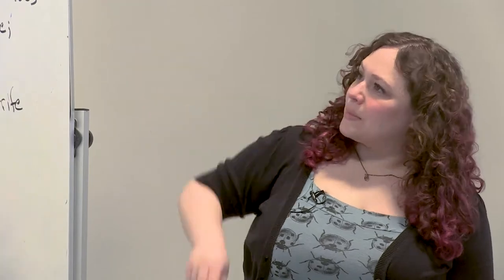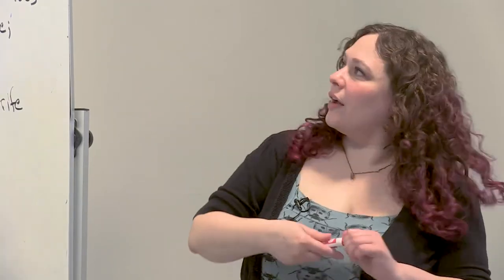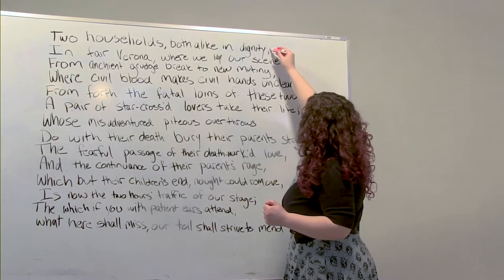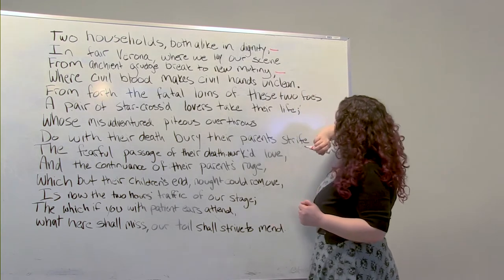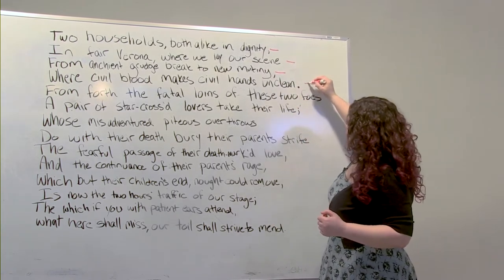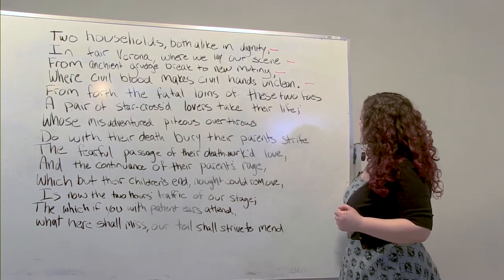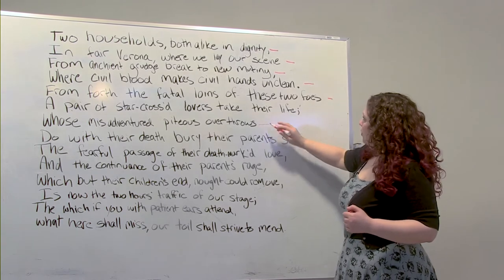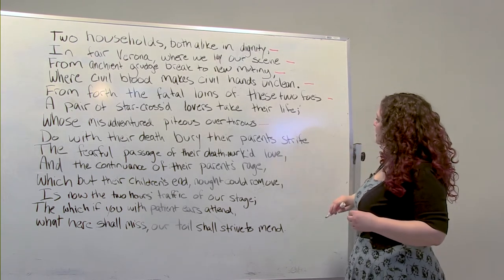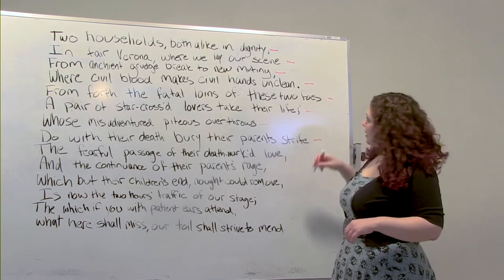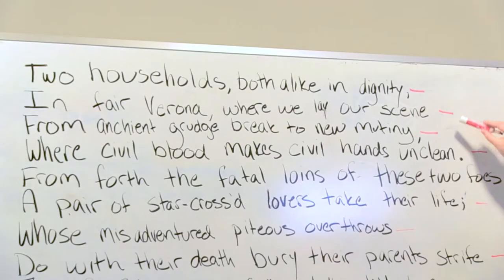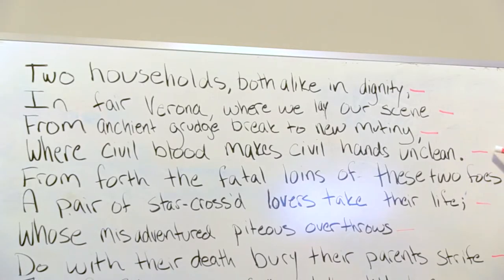Now we've got some rhyme going on here. We've got 'dignity' and 'mutiny,' 'scene' and 'unclean,' 'foes' and 'throws,' 'life' and 'strife.' So we have an A, B, A, B, C, D, C, D rhyming scheme.